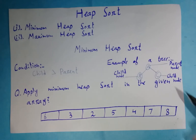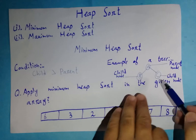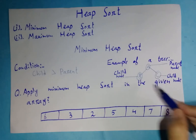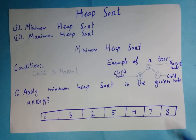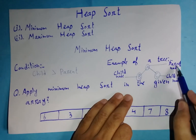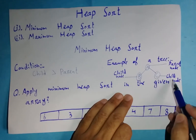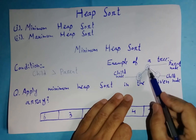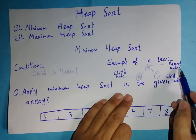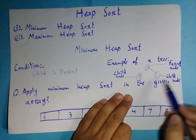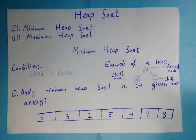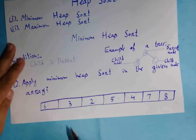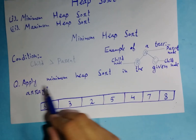If you haven't got any idea about which one is going to be the child node and which one is going to be the parent node, I've taken an example of a tree with three nodes: A, B, and C. Node A is the parent node, and B and C are the child nodes of A. So I hope you understood which one is the child node and which one is the parent node.